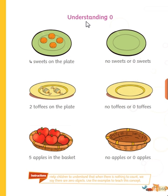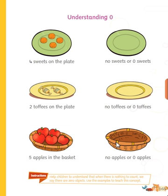In the next page, for understanding of zero — this is what: four sweets on the plate. Now here there is nothing, there is zero. You see the next picture: four toffees. Now next picture — no, zero. Next picture: four apples. Next picture: no, zero apples. This is how we understand zero.